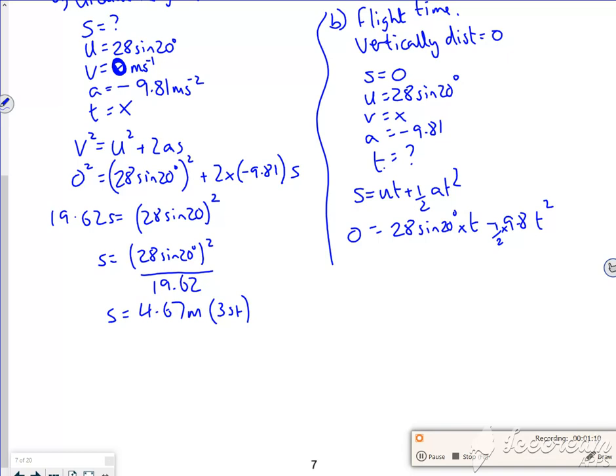So if I take the T squared on the other side, I've got 4.905 T squared minus 28 sine 20 lots of T is equal to zero. I could just stick that straight into poly, couldn't I? With 4.95 minus 28 sine 20 and C is zero.